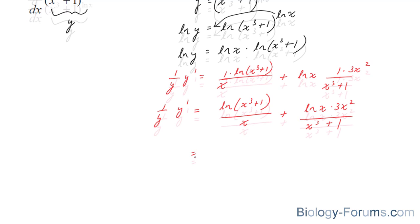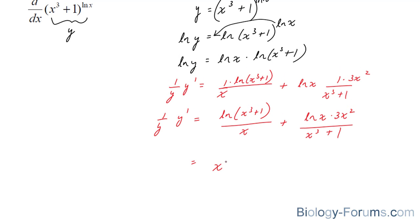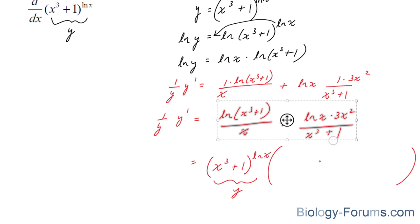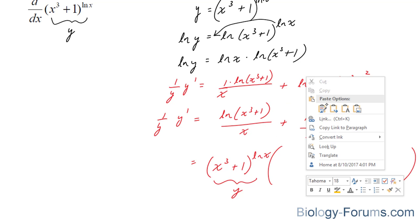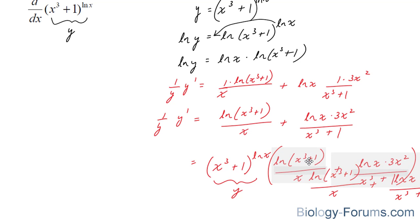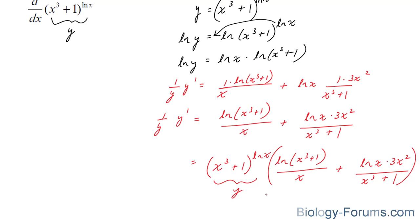We'll now divide both sides by 1 over y, which gives us y times [ln(x³+1)/x + ln x · 3x²/(x³+1)] for y prime. Remember, this y is equal to (x to the power of 3 plus 1) to the power of ln x. So we substitute that in to get our final answer. And there you have it — that is how to solve examples where the base and the exponent both contain a variable.